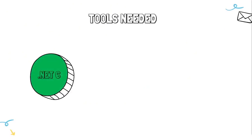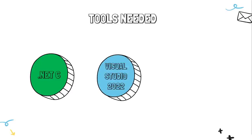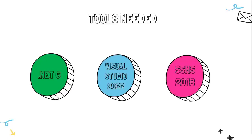Let's take a look at all the tools we will use in this course. We will be using .NET 6, so make sure to install the latest version. For the IDE, we will be using Visual Studio 2022, which has lots of advanced features compared to 2019, and you can install the free version. For our database, we will use SQL Server, and then install SSMS — SQL Server Management Studio. If you have an older version of SSMS, that's fine as long as you can connect to SQL Server locally.